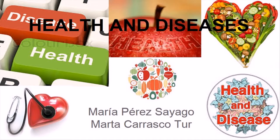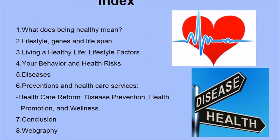Health and Diseases. By Maria Pérez Sayago and Marta Carrasco. Index: 1. What does being healthy mean? 2. Lifestyle, genes and lifespan. 3. Living a healthy life, lifestyle factors. 4. Your behavior and health risks. 5. Diseases. 6. Preventions and health care services. 7. Conclusion. 8. Bibliography.